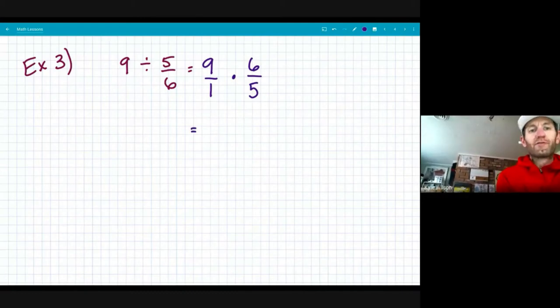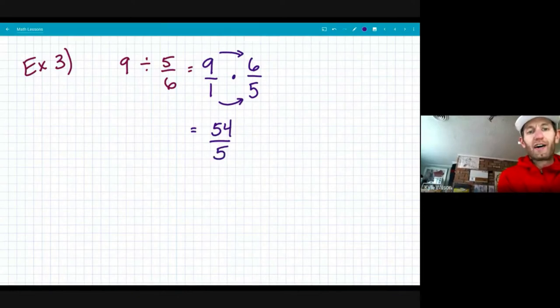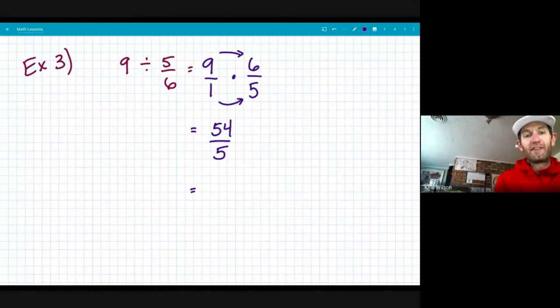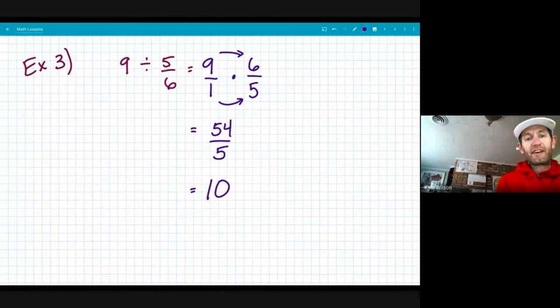So when I go ahead and multiply them, nine times six is 54 and one times five is five. I cannot leave it this way. Simplest form in this case is 54 divided by five, because fractions are division. And I need to see how many fives go into 54 without going over. In this case, it's 10.